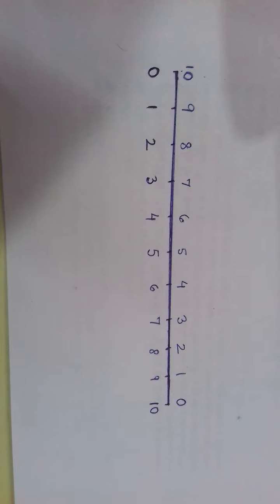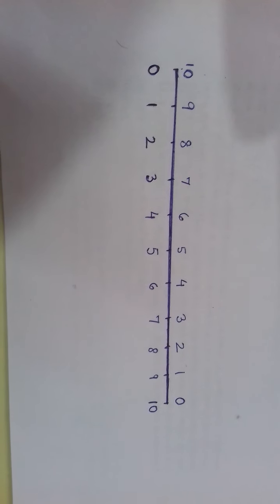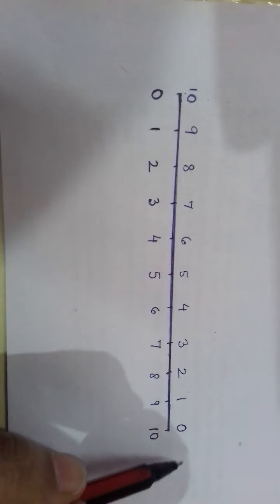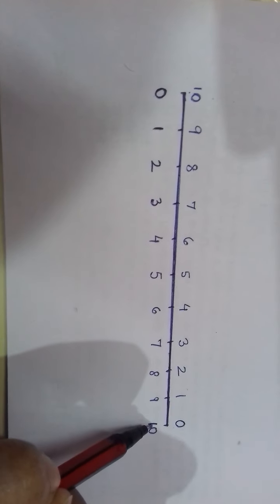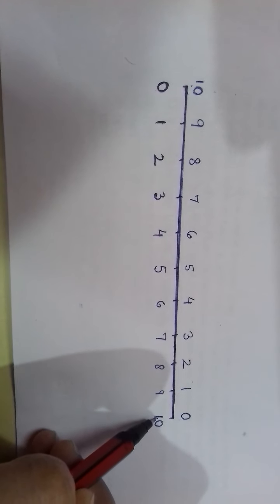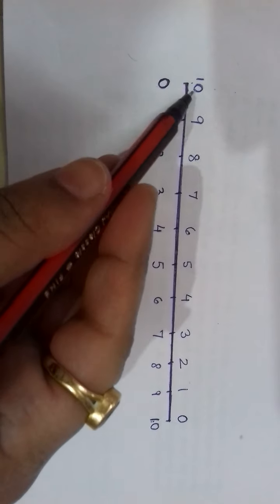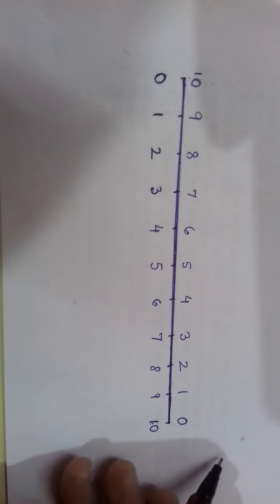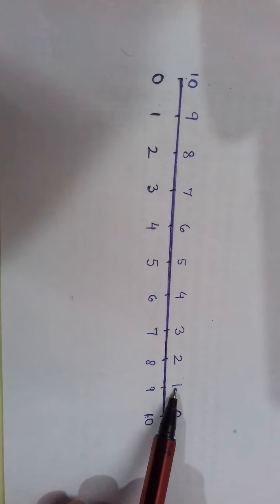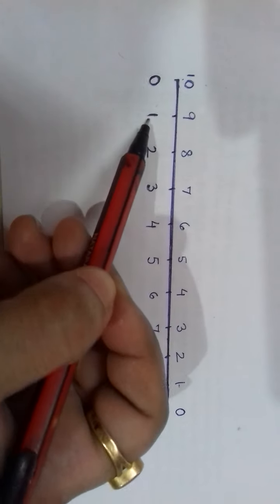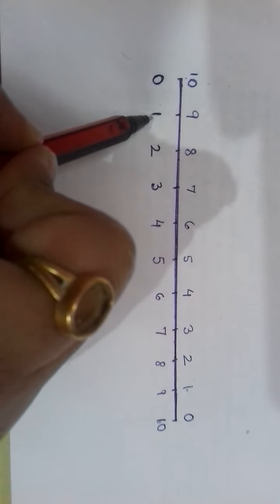Now, something very interesting to see over here. Let's take the extremes: here it is 10 and 0, and here we have 0 and 10. If you add 0 and 10, the answer will come out to be 10. Similarly, if we add 9 and 1, or 1 and 9, the answer will be the same — that is 10.